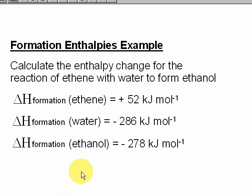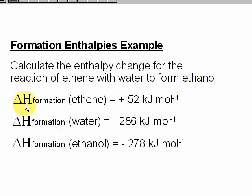Here's another example, but this time using formation enthalpies. Calculate the enthalpy change for the reaction of ethene with water to form ethanol. The data which you've been given includes the formation enthalpy of ethene.